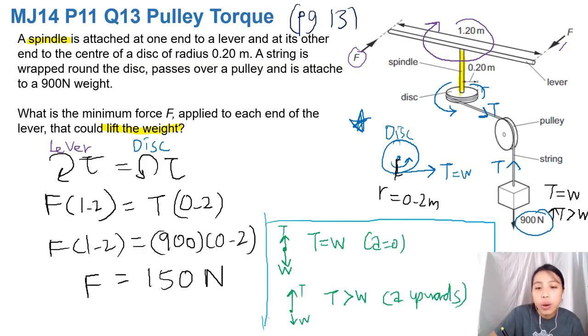Okay, and that is what we want here. We want to lift the block. So we need to find the minimum torque to exert so that at least it won't fall down. You can slowly get it to go up. Okay, so that's the pulley torque question for this case.